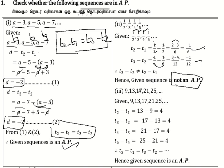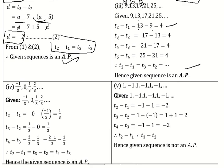For the next sequence: Term 1 is minus 1/3, Term 2 is 0, Term 3 is 1/3, Term 4 is 2/3. Term 2 minus Term 1 equals 0 minus bracket minus 1/3, so minus into minus gives plus, equals 1/3.